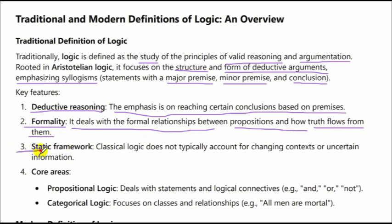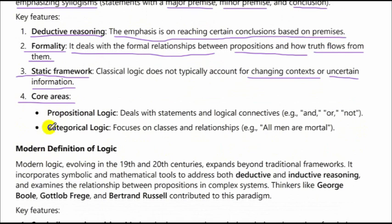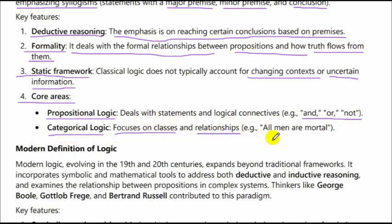Third feature is static framework — classical logic does not typically account for changing contexts or uncertain information. Fourth feature covers propositional logic and categorical logic: propositional logic deals with statements and logical connectives such as 'and,' 'or,' 'not,' while categorical logic focuses on classes and relationships, for example, 'all men are mortal.'